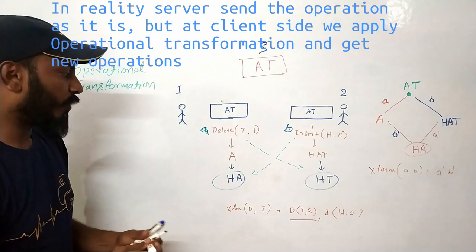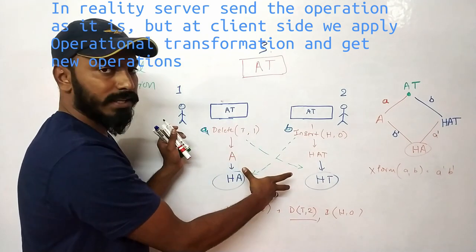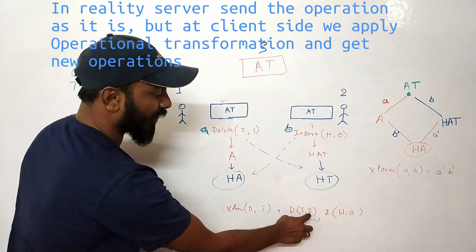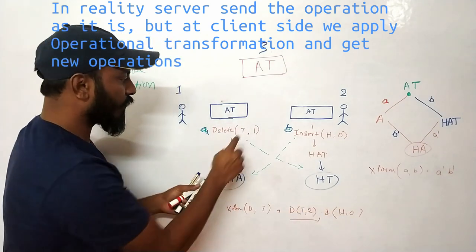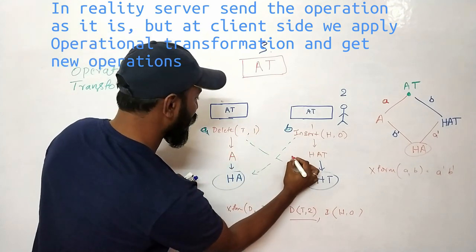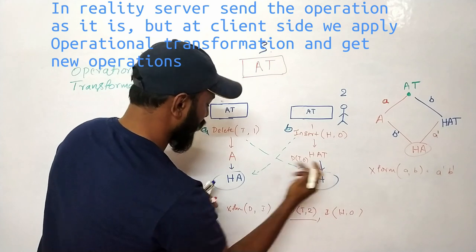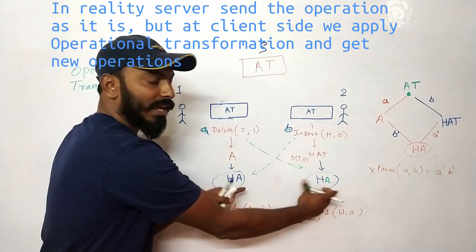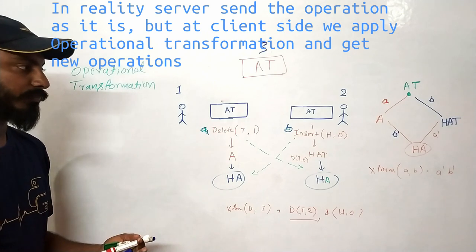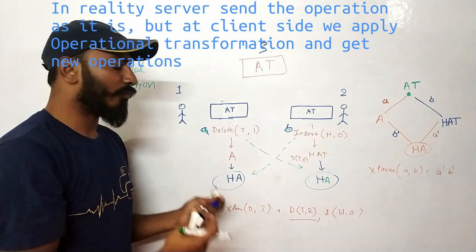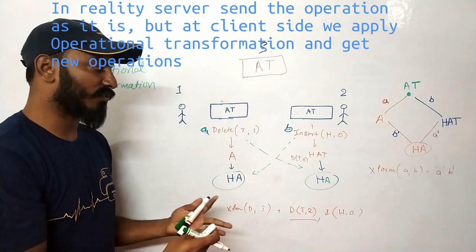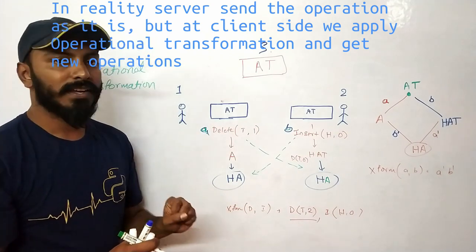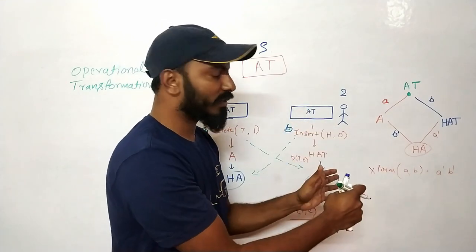To rewrite the example: if we had passed the two operations through the transform function, we would get 'delete T at position 2' on one side and 'insert H at position 0' on the other — and both sides arrive at the same state 'HAT'. OT also supports redo, undo, and many more features. The diamond diagram can grow much bigger for complex scenarios.